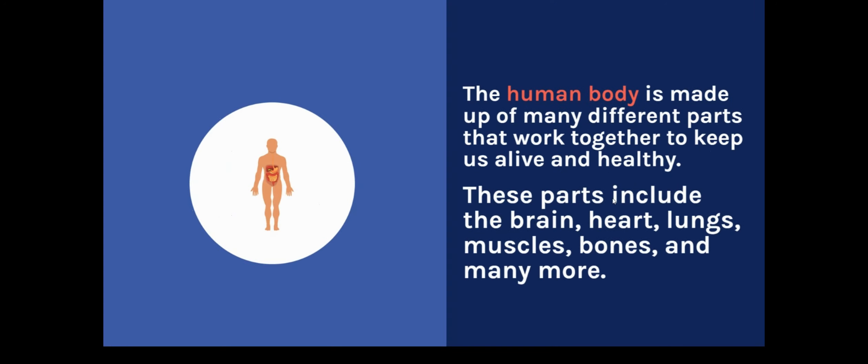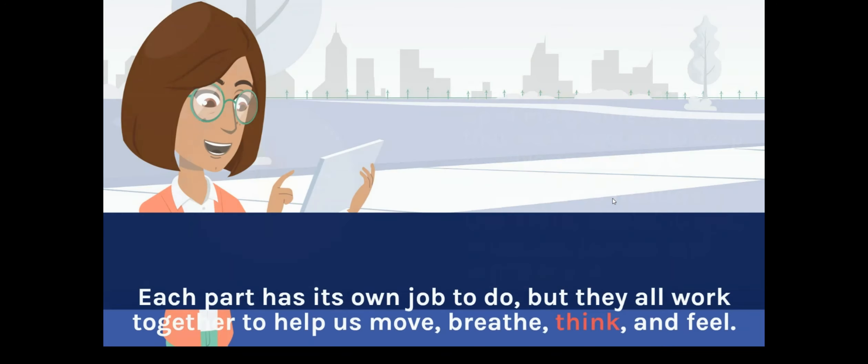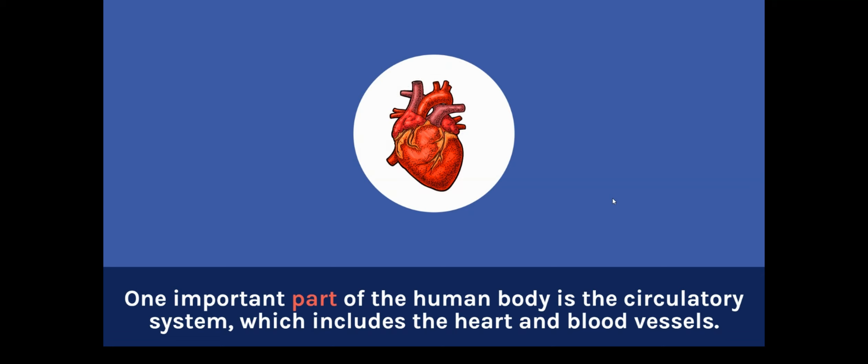The human body is made up of many different parts that work together to keep us alive and healthy. These parts include the brain, heart, lungs, muscles, bones, and many more. Each part has its own job to do, but they all work together to help us move, breathe, think, and feel.